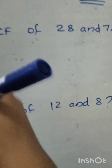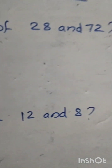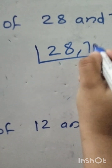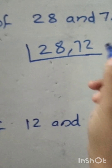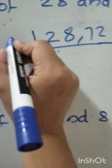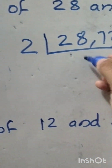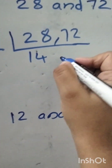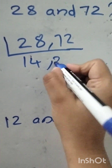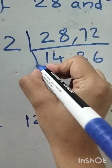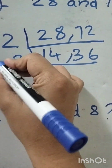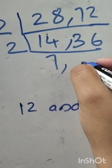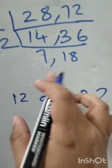Let's take an example: find the HCF of 28 and 72. Both 28 and 72 are completely divisible by 2, so we write 2. Then 28 divided by 2 equals 14, and 72 divided by 2 equals 36. Then 14 and 36 can again be divided by 2: 14 divided by 2 equals 7, and 36 divided by 2 equals 18.